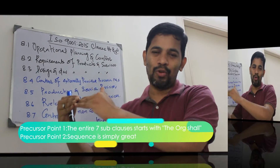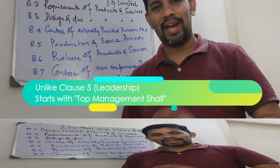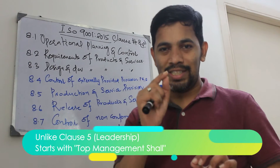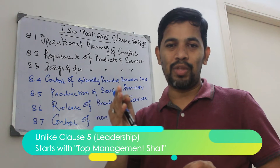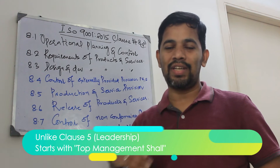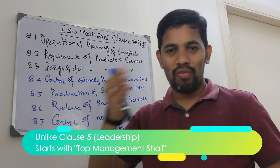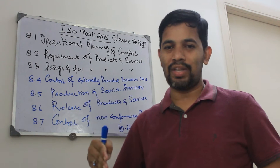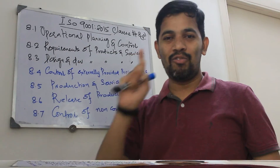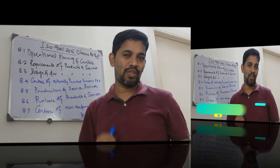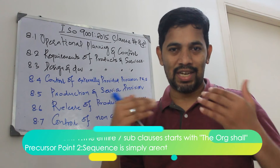On the other side, if you go back to class number 5 you will remember there is something called leadership. The entire standard — all the subclasses — start with 'the top management shall,' whether it is 5.1, 5.2, or 5.3. Exactly the same structure: class number 8's first precursor point is that 'the organization shall.' That's how it started.